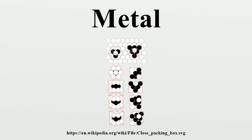Sheets of metal beyond a few micrometers in thickness appear opaque, but gold leaf transmits green light. Although most metals have higher densities than most non-metals, there is wide variation in the densities, with lithium being the least dense solid element and osmium the densest. The alkali and alkaline earth metals in groups IA and IIA are referred to as the light metals because they have low density, low hardness, and low melting points.